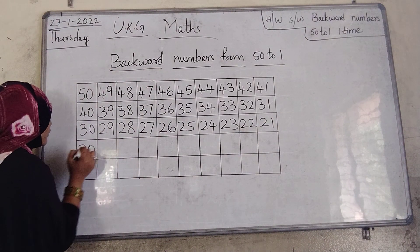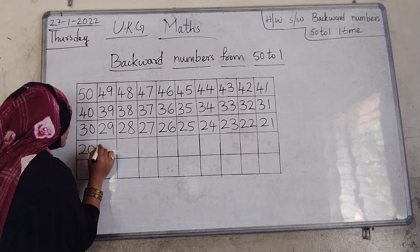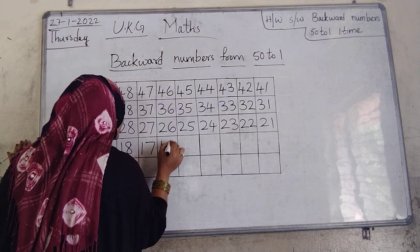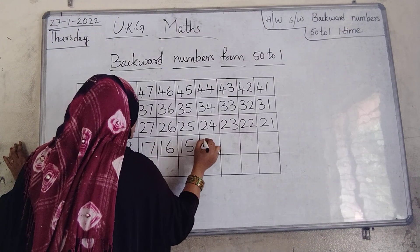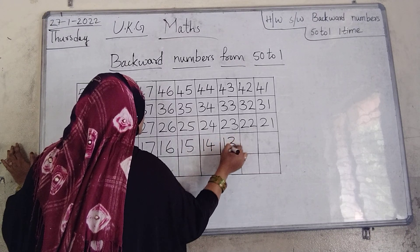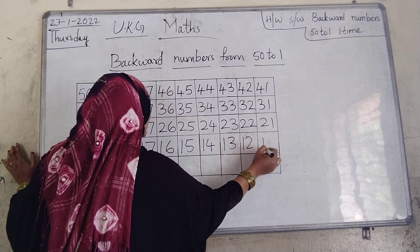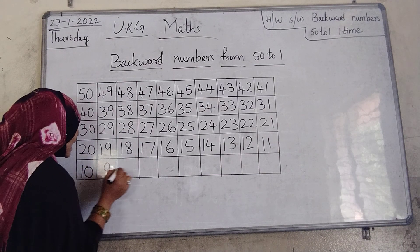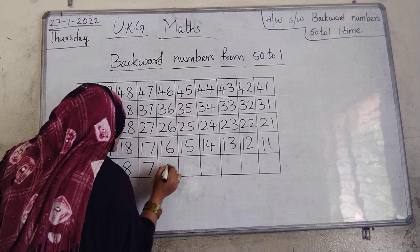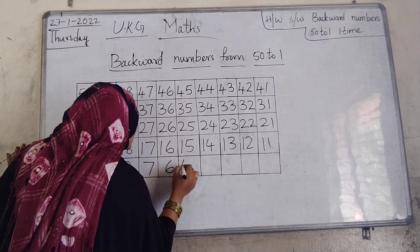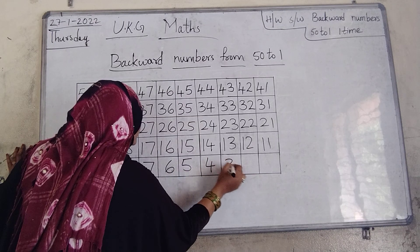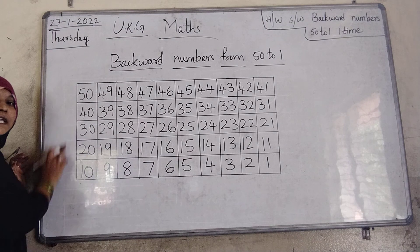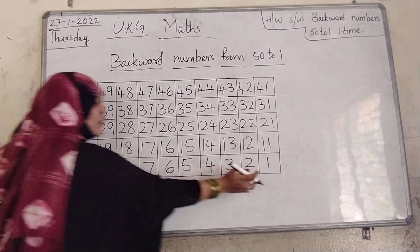20, 19, 18, 17, 16, 15, 14, 13, 12, 11. Next, 10, 9, 8, 7, 6, 5, 4, 3, 2, 1. These are called backward numbers from 50 to 1.